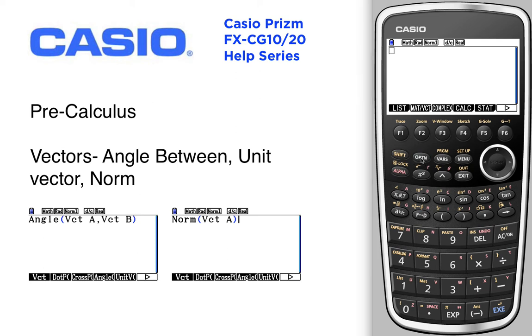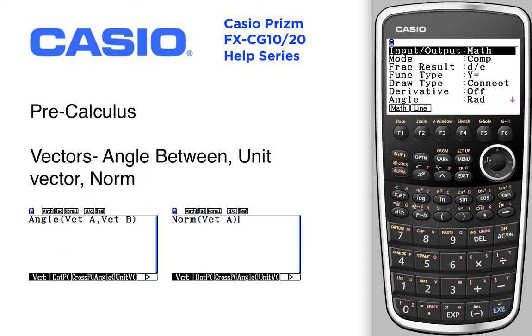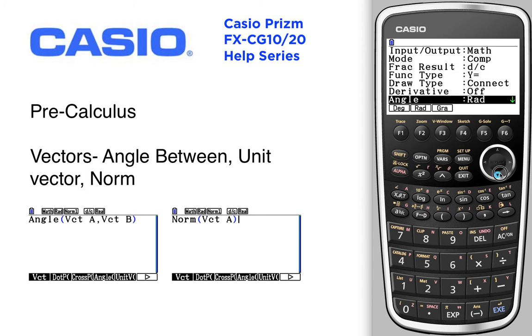Let's go into options, vector. We're going to find the angle between two vectors, so let's check our angle setup. Currently in radians — let's go to degrees.